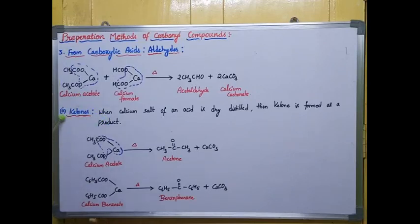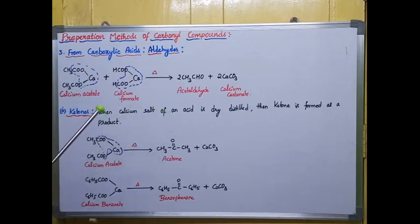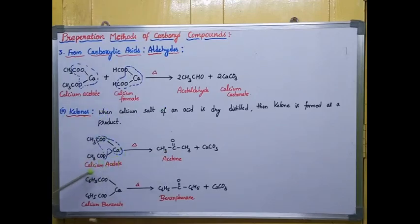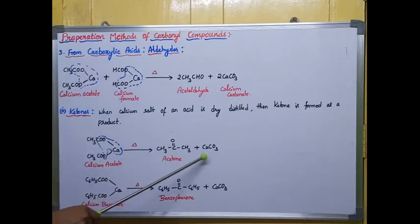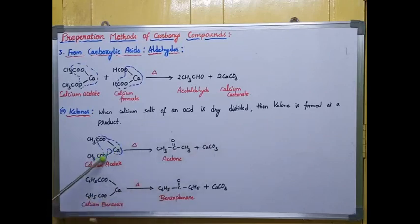Moving to the next method: here the calcium salt of an acid undergoes distillation and produces a ketone as a product. I am taking calcium acetate and calcium benzoate. You can observe it undergoes distillation and produces acetone (CH3COCH3) and calcium carbonate (CaCO3) — one molecule each.